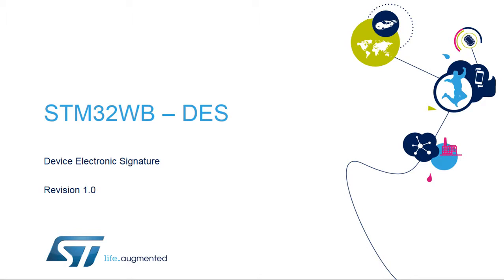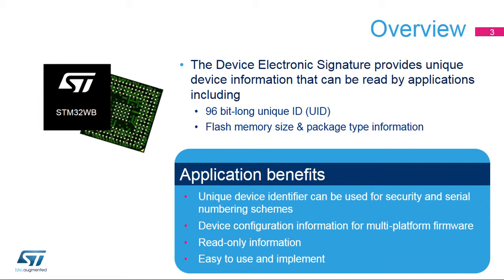Hello, and welcome to this presentation of the STM32 Device Electronic Signature, which can be used as a device identification or serial number. The Device Electronic Signature provides a set of registers containing die identification, unique device identifier or UID, and other read-only device information, such as memory size, package type, and device calibration information.